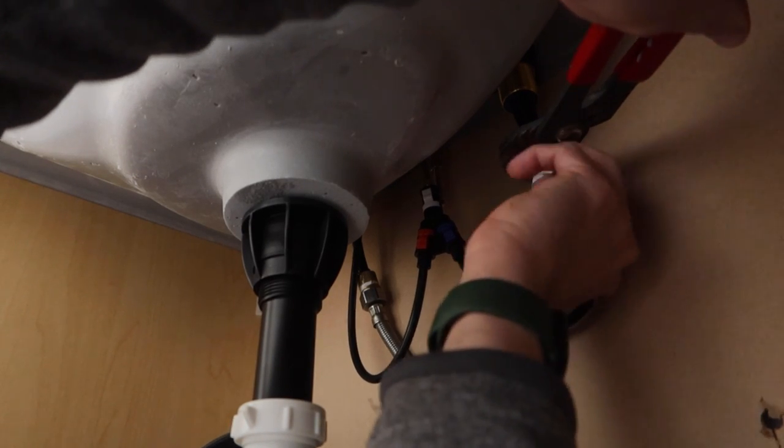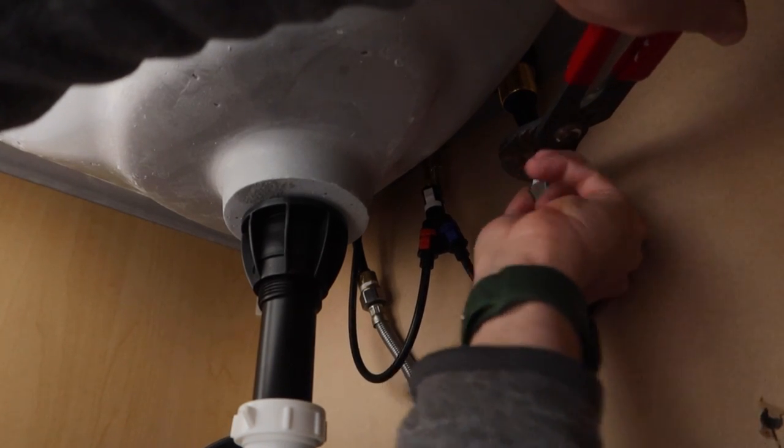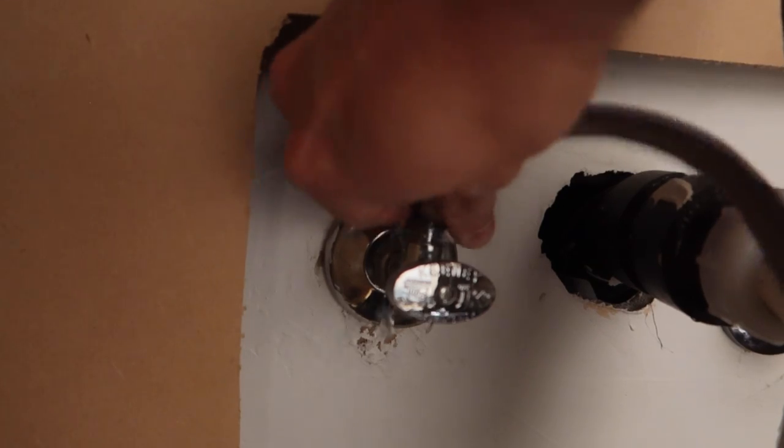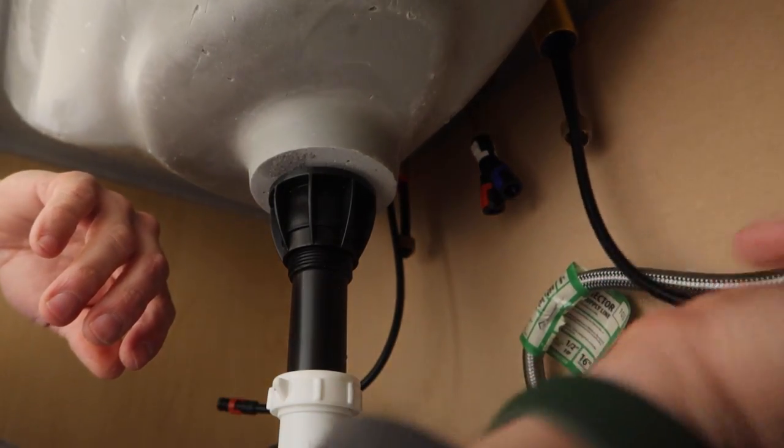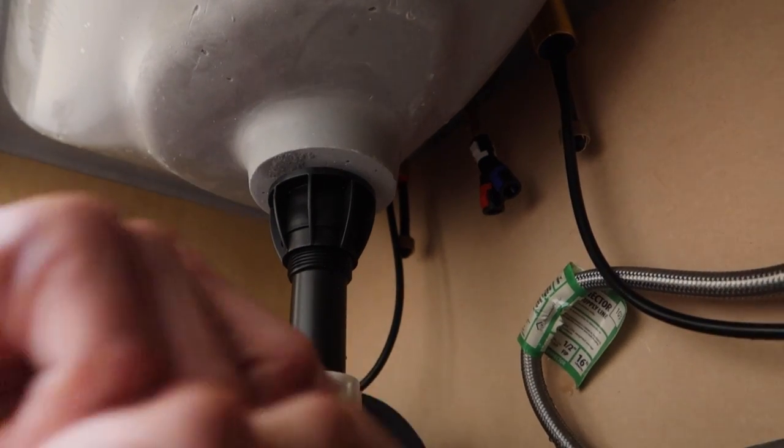Now this faucet comes with new water lines, so I can just keep these ones in my plumbing kit for another project down the road. From there, I can pop the connections from the faucet and remove the locking nuts that hold the fixture and faucet handles in place.